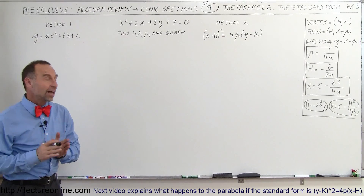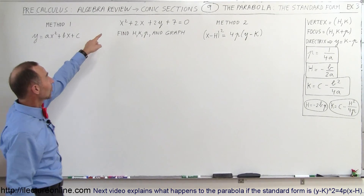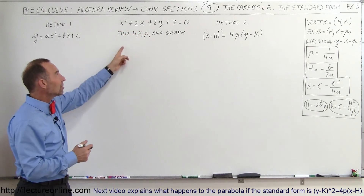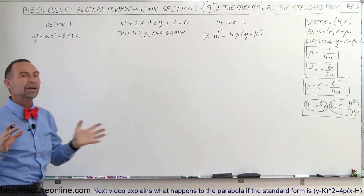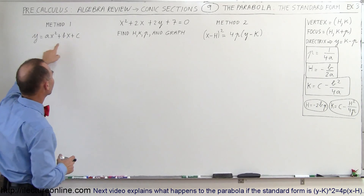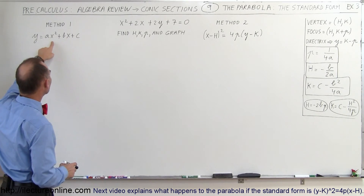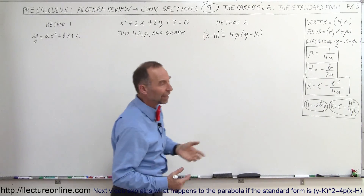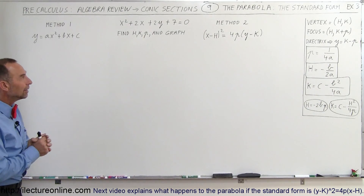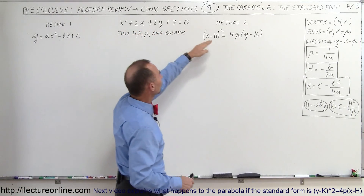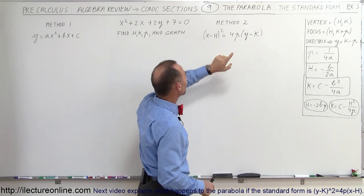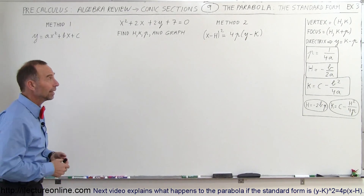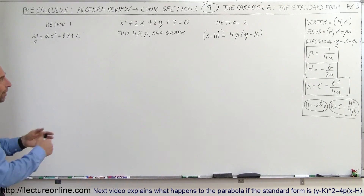Welcome to our lecture. In this example we're going to show you how to take a quadratic equation and find h, k, and p, and then graph the equation. There are two methods to do that. The first method is to take the equation and make it look like y equals ax squared plus bx plus c, and find p, h, and k in terms of a, b, and c. The second method is to put it in standard form, which will automatically give us h, k, and p. We'll do it both ways and should get the same answer.